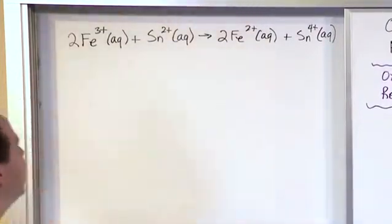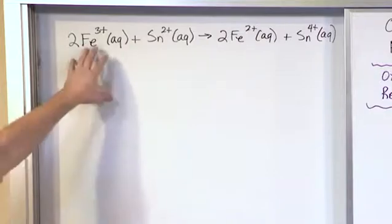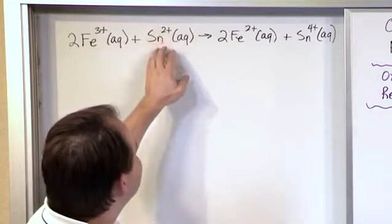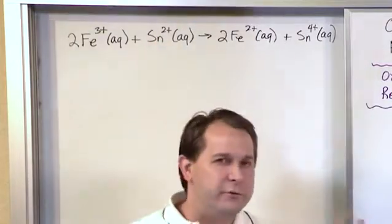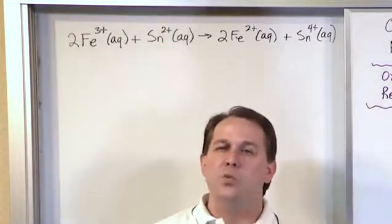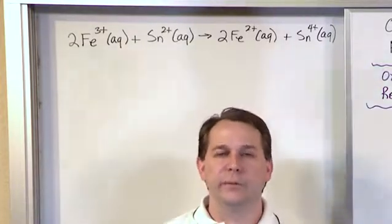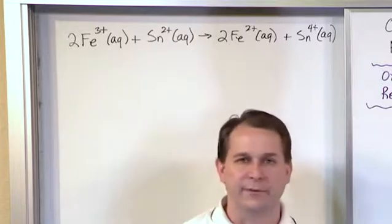you don't go to the lab supply warehouse and buy Fe³⁺ ions in aqueous solution, typically. You don't go buy Sn²⁺ ions with a charge of plus 2 in a bottle. You don't do that. When you see equations like this that have charges all over everything, those are what we call net ionic equations. We've learned about those before.